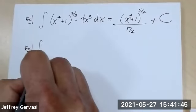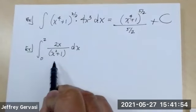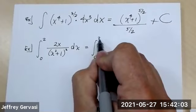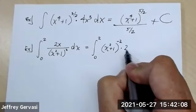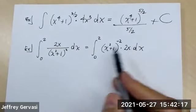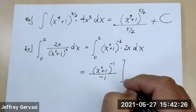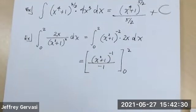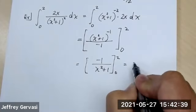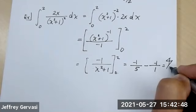Another example: a definite integral from 0 to 2. This can be rewritten as x squared plus one to the negative two power. The outside is exactly the derivative of the inside raised to a real number power — that's the special case; that's our thing. We can go right to it. Plugging in 2 first, then 0, we get four-fifths.